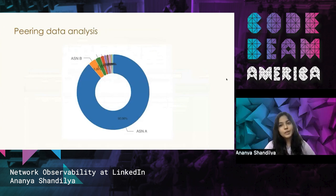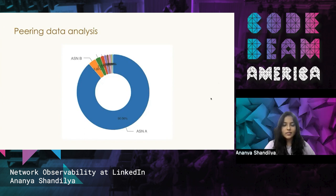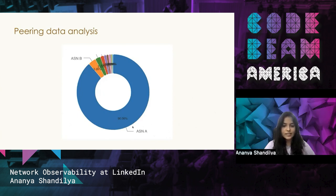Next is peering data analysis. Peering is when one network directly connects with another network to improve network throughput. This usually involves some cost for setting up the peering, and you would ideally want to optimize the different peerings you have set up. For that, you need data on which ASNs are most common in your network. ASN is the Autonomous System Number of a network — basically an identifier for different independent networks. For example, if you can see that 90% of all traffic is for a single ASN, setting up a direct peering with that ASN could be beneficial in terms of both cost and network throughput.